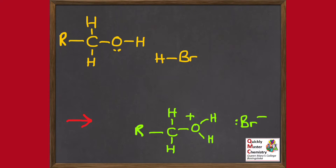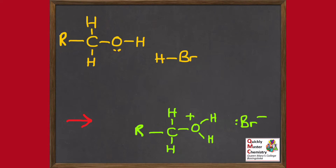So let's look at this first example. We've got an alcohol — the R at the top just stands for the rest of the molecule — reacting with hydrogen bromide to produce the product shown in green at the bottom. It's just one step in a mechanism; those wouldn't be the final products. The challenge here is to add the curly arrows needed to show what has gone on in terms of electron movement to go from those reactants to those products.